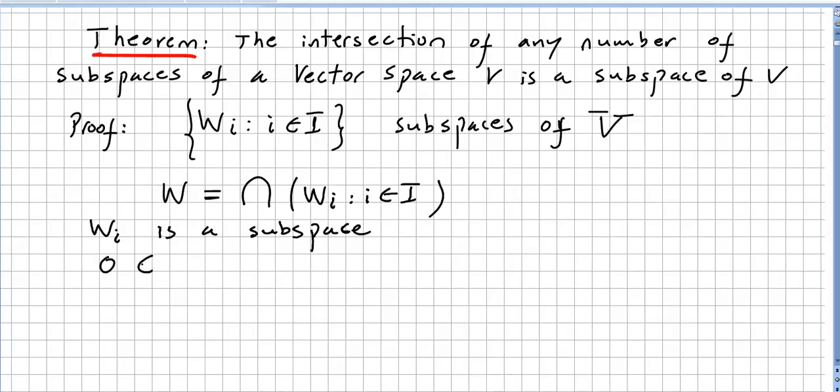So zero will be here for every i in I. So that's point number one. So zero will be here because every single one is a subspace of the vector space. So zero is here already.